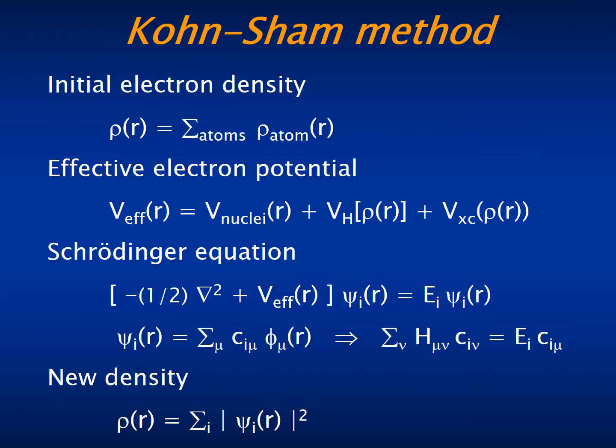The normal implementation of density functional theory is the Kohn-Sham method. You start with an approximate density, usually a sum of atomic densities.